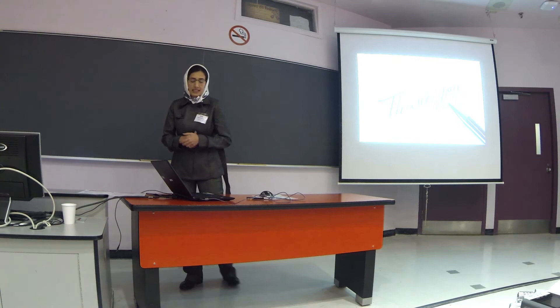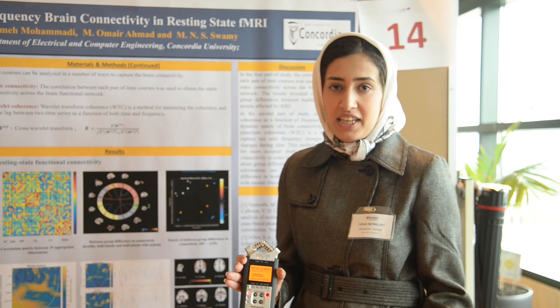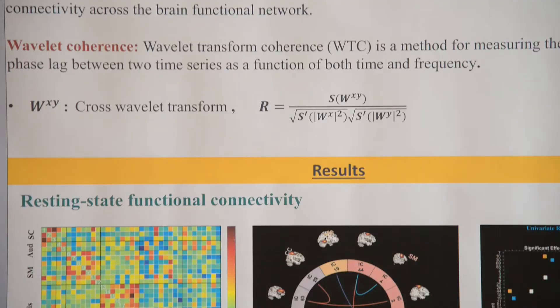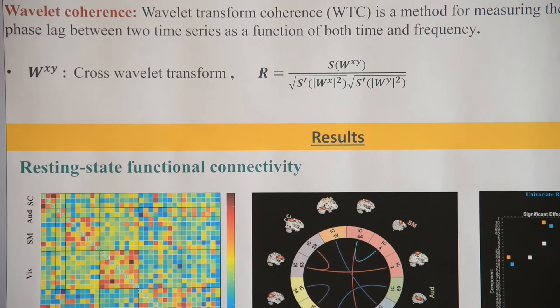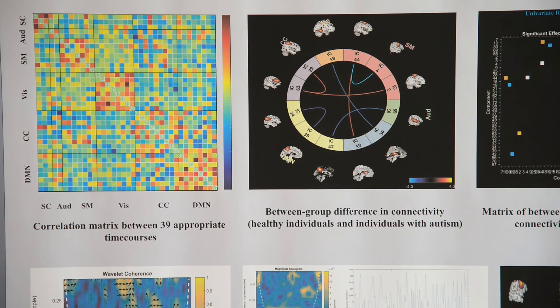Hello. My work is about time-frequency brain connectivity in resting state fMRI. The aim of this investigation is to see what the difference is in the functional brain connectivity of people who have mental illnesses compared with healthy people. I decompose my fMRI images into independent components — independent regions of the brain — and the time courses corresponding to those regions. The relationship between time courses gives us the connectivity of different parts of the brain.